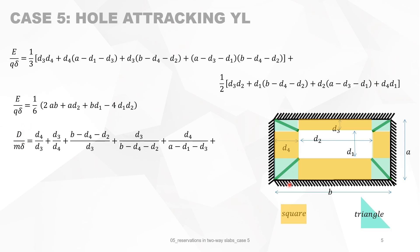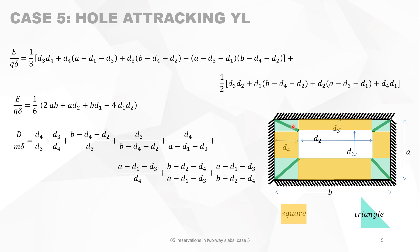The work done by the internal forces, which are the bending moments, is calculated by projecting the yield line onto the rotation axis. It will be D4 times the angle, which is delta divided by D3 — so D4 divided by D3 — and the other direction gives the second term. We do this for all four elements. In total you have eight terms: four corners times two directions, projected to their respective rotation axes.